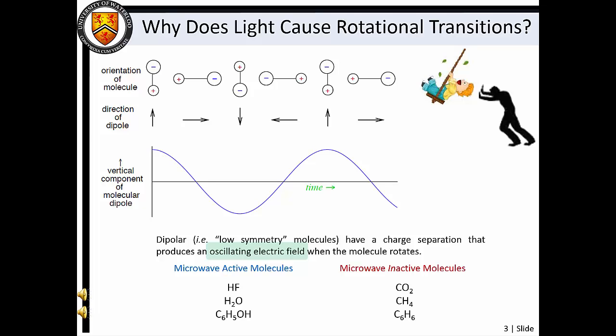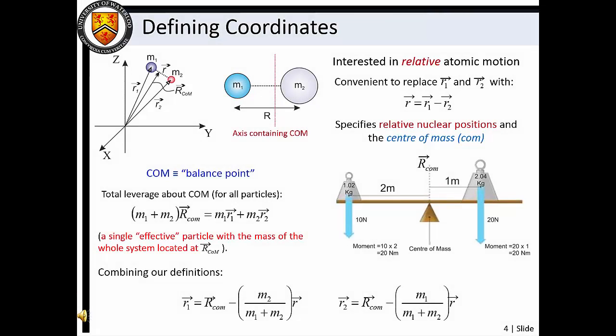Quantum mechanically, we now know that light energy can be absorbed or emitted if the photon energy matches the energy gap between two rotational levels and the transition dipole moment is nonzero. Since we are concerned with the relative rotational motion of the nuclei, it is useful for us to define our molecular coordinate system in terms of the relative nuclear positions and the molecular center of mass. The center of mass is the balance point of the molecule, so molecular rotation will occur about this point in space.